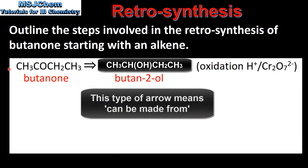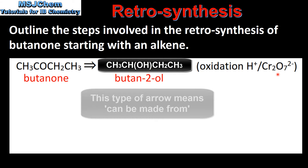Working backwards, butanone can be made from butan-2-ol. This is an oxidation reaction using the oxidizing agent acidified potassium dichromate.